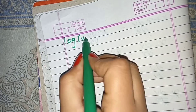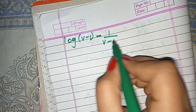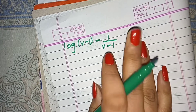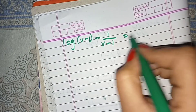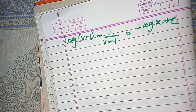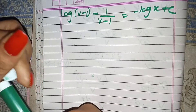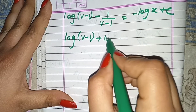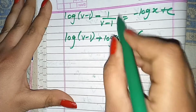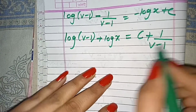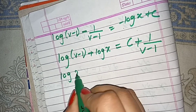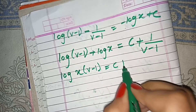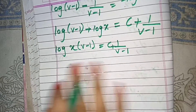We apply the log formula here. The integration gives: log|v minus 1| minus 1 over (v minus 1), and then here we get a minus. So: log|v minus 1| minus 1 over (v minus 1) equals minus log x plus c. Now we have two log terms; where log is plus we write multiplication, so: log[x(v minus 1)] equals c plus 1 over (v minus 1).